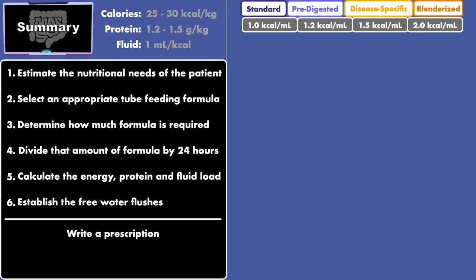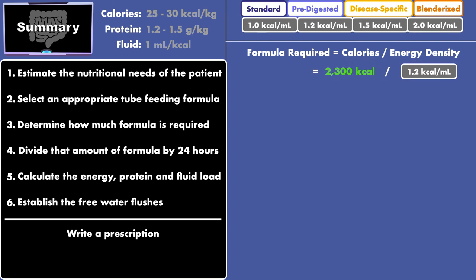Once a formula is selected, you determine how much is required by dividing the calories needed by the energy density. For example, if you need to give 2300 calories and choose a 1.2-calorie formula, the required amount of formula is 1,917 milliliters. This is where you divide by 24 to get the feeding rate, which would be 80 milliliters per hour.